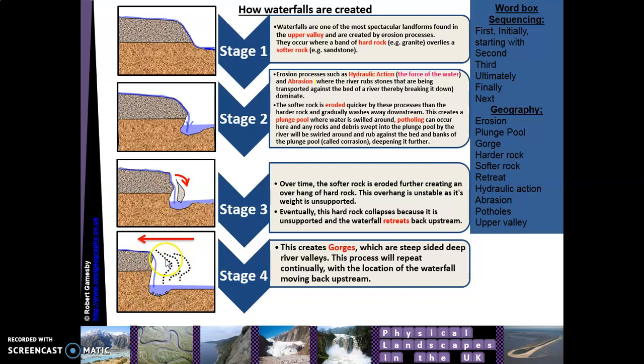Stage four shows the continued erosion of the soft rock and the retreat of the hard rock. As it retreats, it forms something called a gorge — think of the Grand Canyon, a large winding gorge with near-vertical sides and the river running down the middle. The gorge forms because of the retreat of the waterfall. It's important to remember that waterfalls form gorges — if asked how a gorge forms, explain how the waterfall forms and then add that as it retreats over time it creates the gorge. These two features are really the same feature, as one leads to the other.